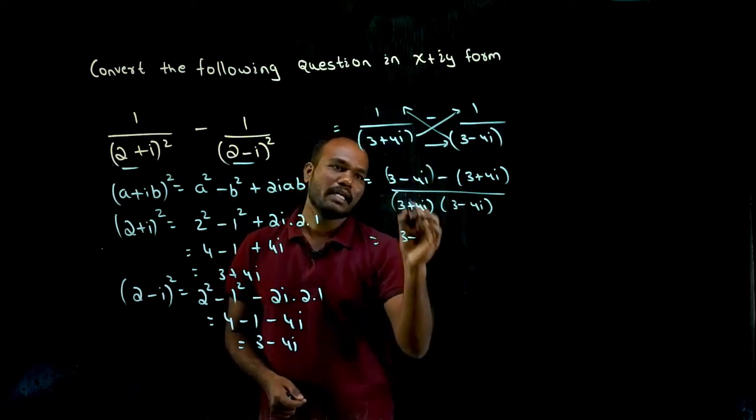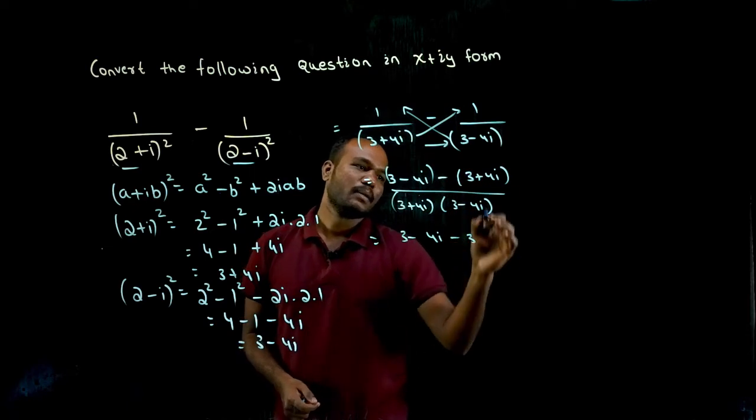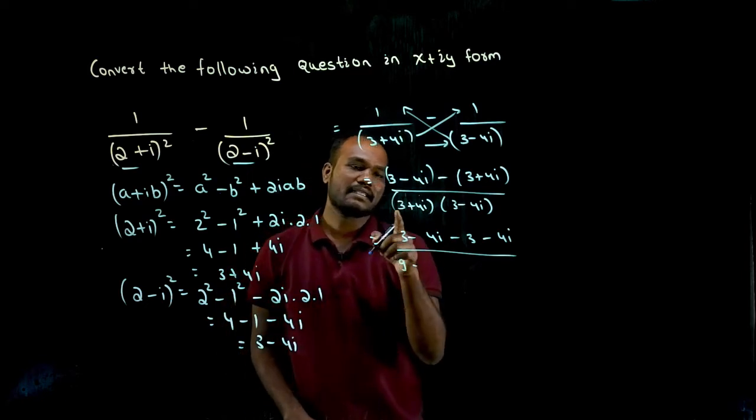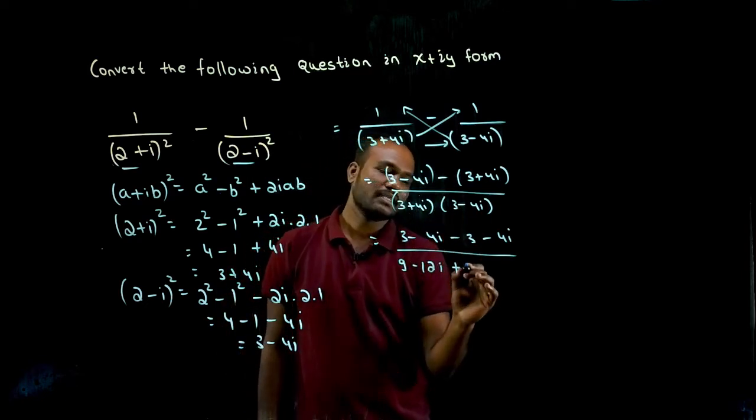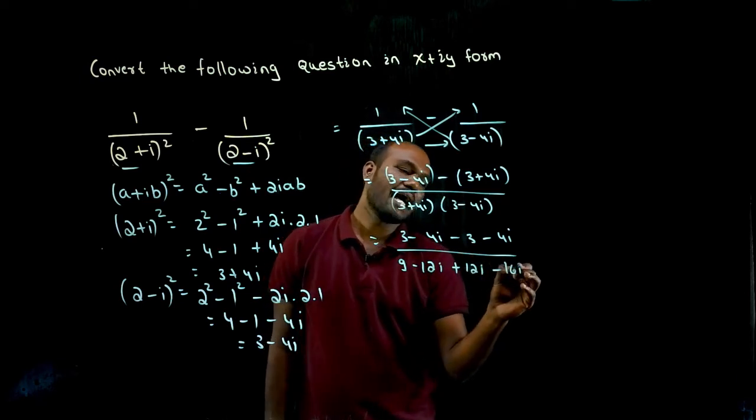Now so 3 minus 4i, minus into plus is minus 3 minus 4i in the denominator. We can multiply 3 into 3 is 9 minus 3 into 4 is 12i, again plus is 4 into 3 is 12i, plus into minus is minus 4 into 4 is 16i square.